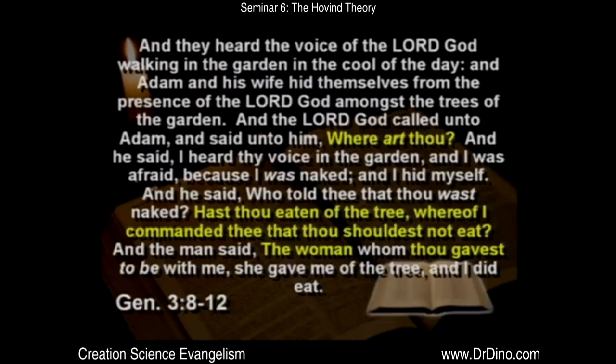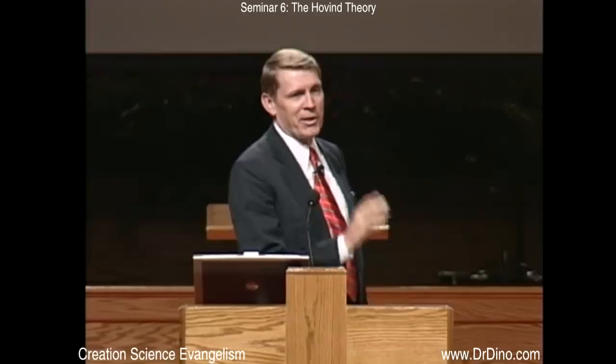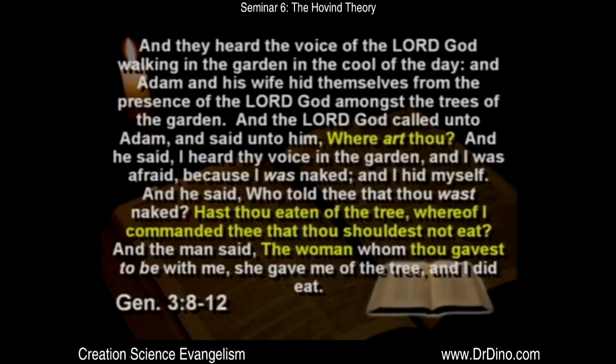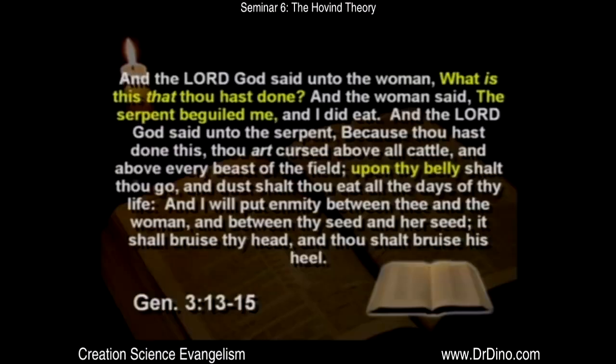Adam's first response was to pass the buck — 'The woman that you gave me' — implying, 'God, this is really your fault.' Everybody does that, trying to pass the buck. But finally he confessed and said, 'Yes, I ate of the tree.' And then God said to the woman, 'What have you done?' And she said, 'Well, the serpent — implying the one you made — tricked me and I ate.' She finally, reluctantly, confessed.